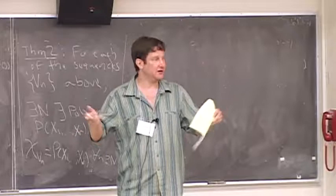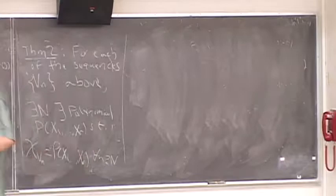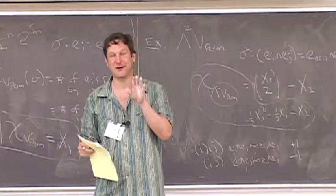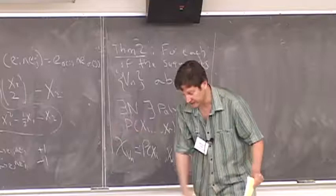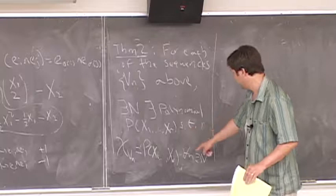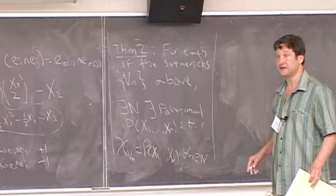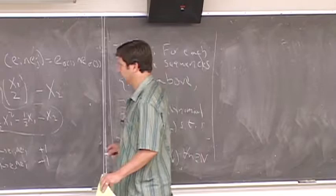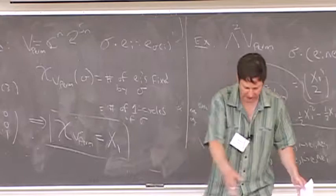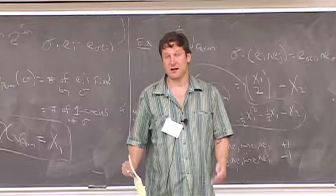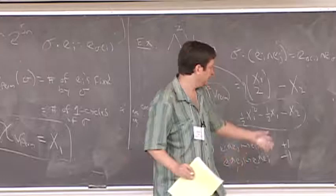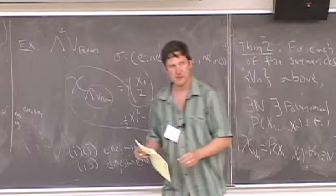There's a theorem of Lair and Solomon saying that when you decompose the i-th cohomology of the configuration space of ordered points in the plane, you never see the sign representation. You can see this from our result: if you saw the sign representation, to know the trace you'd need your whole cycle decomposition. But since the character is a polynomial in X₁, X₂, etc., you can see their theorem as coming out of this point of view. The r in the polynomial doesn't depend on n — it just depends on the sequence. There exists N, r, and a polynomial in r variables.